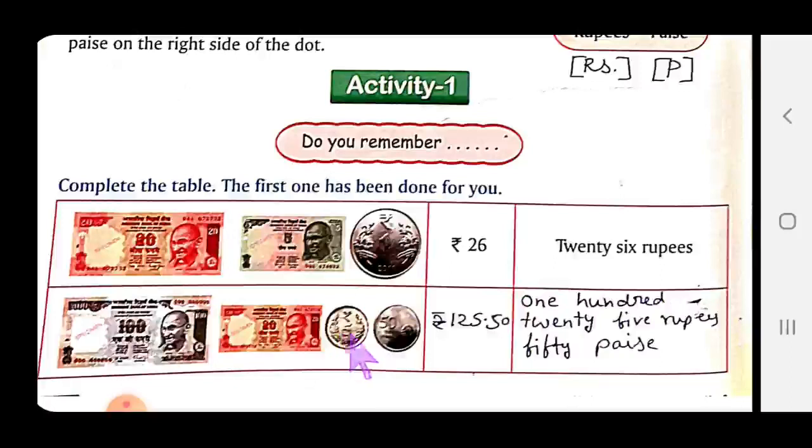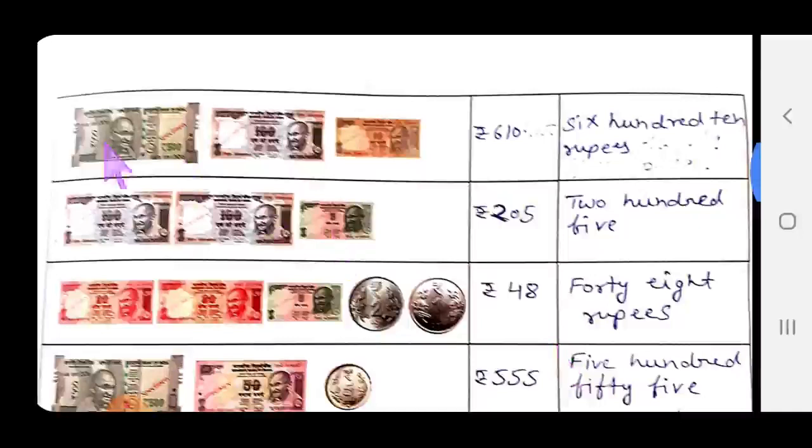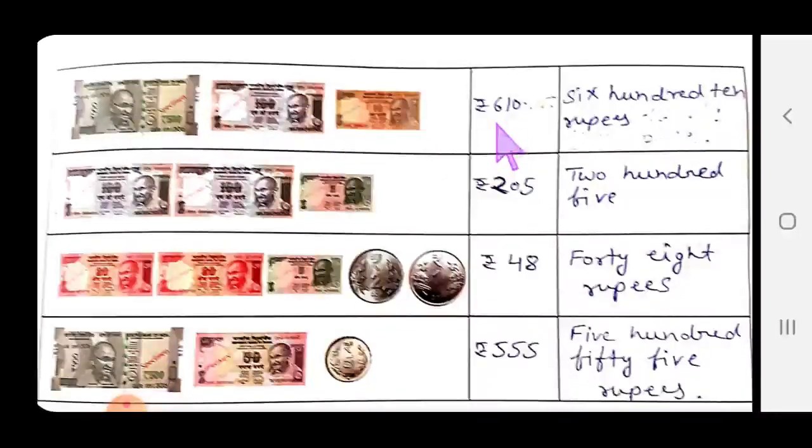Here we have 25 rupees, 5 rupees, 50 paise coin. Total will be 125 rupees 50 paise. Here is 500 rupees note, 100 note, 10 note. Total we have 610 rupees.